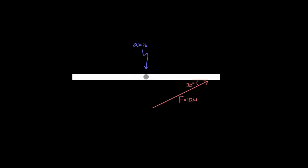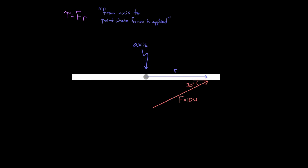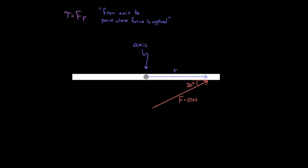Now that we've identified the axis, we can figure out how much torque we're exerting. Torque is F times D, or F times R. What's important to know is that this R represents the vector that points from the axis to the point where the force was applied. So in this case, that would go from this axis right here to the point where the force was applied — this is R. Note that R is not the entire radius necessarily; it's always from the axis to the point where the force is applied.